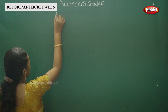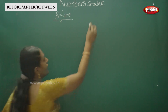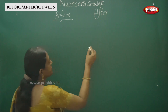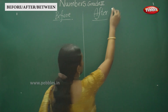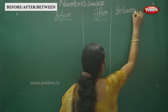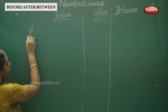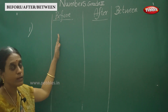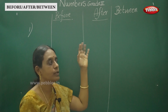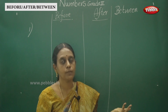Now we are going to read before — that is what comes before — and after, and between numbers. Now we are going to read before number, after number, and between number. Between numbers 10 and 15: 11, 12, 13, 14.